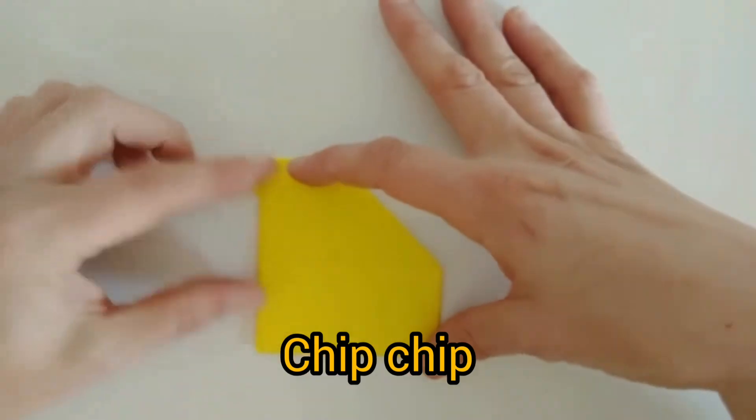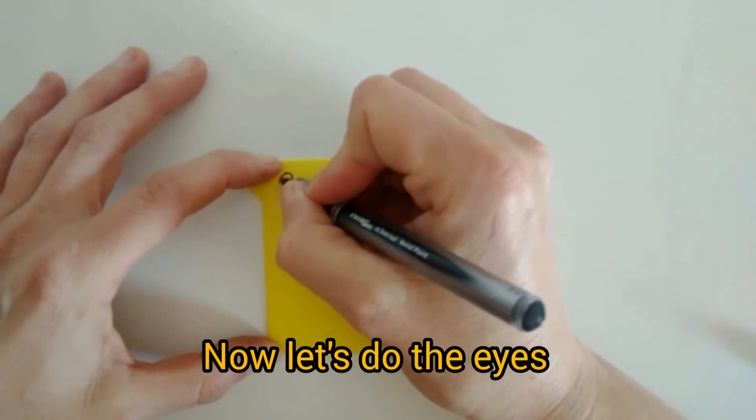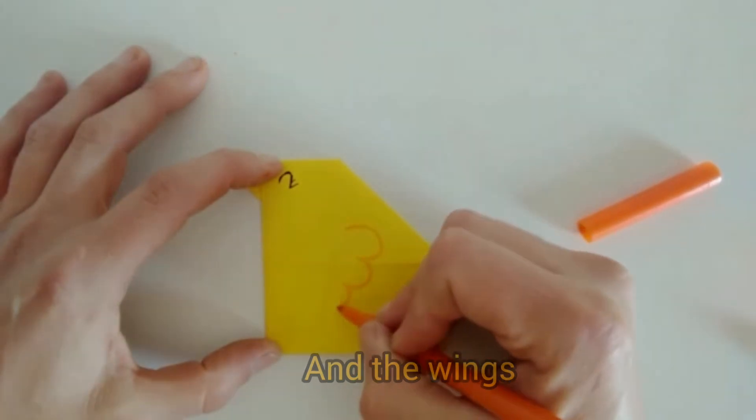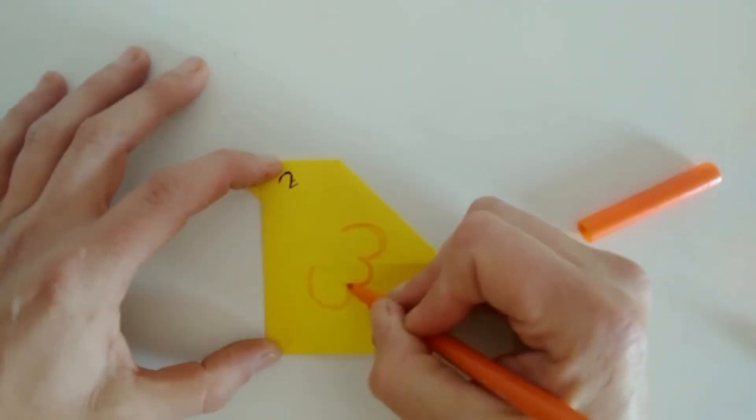Cheep, cheep. Cheep. Now let's do the eyes. And the wings. The chick's wings. Cheep, cheep, cheep.